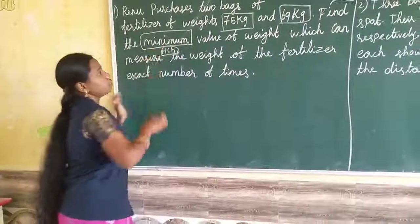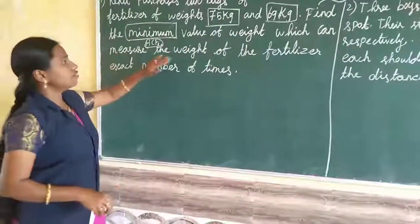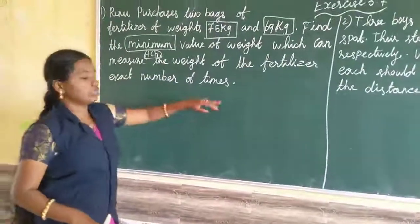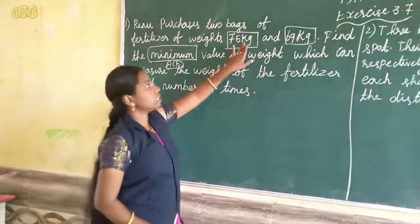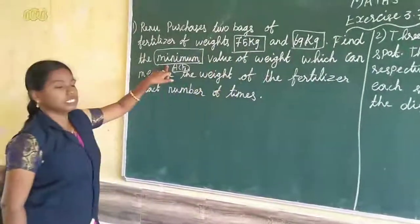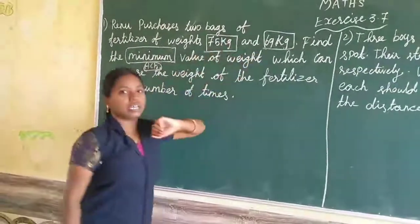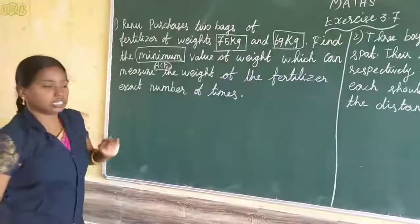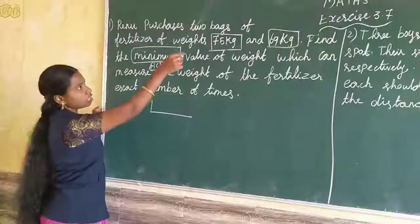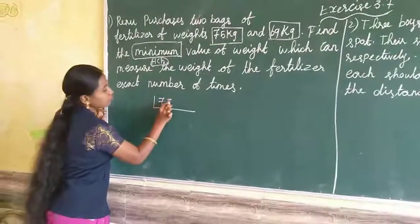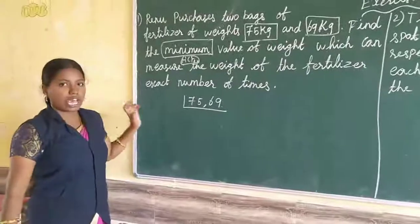This is the hint word. Value of weight which can measure the weight of the fertilizer exact number of times. You have to consider the numbers and this hint word. So you want to find out the HCF of 735 and 69.